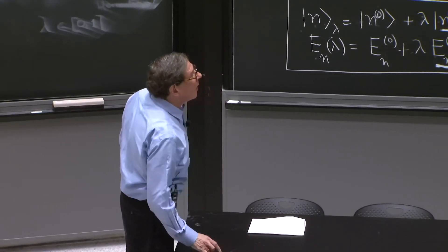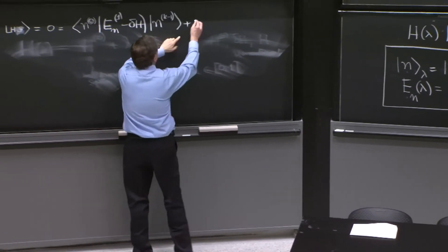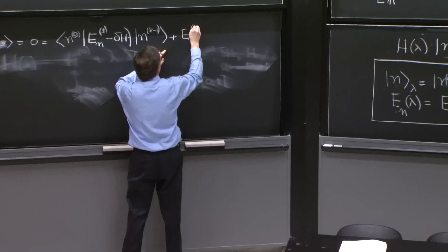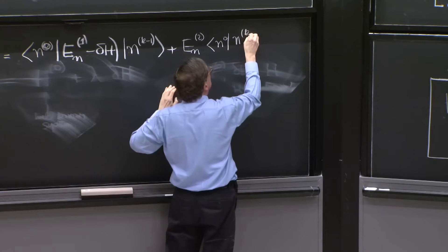And OK. So look what happens here. Let's do the next term, for example. en2 n0 nk minus 2.